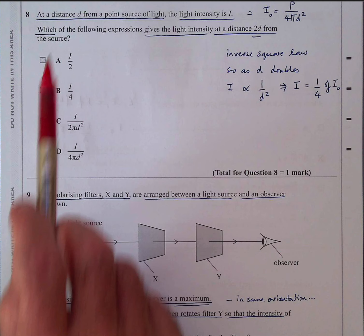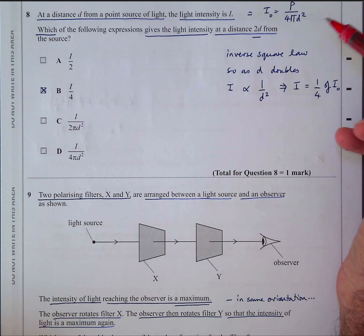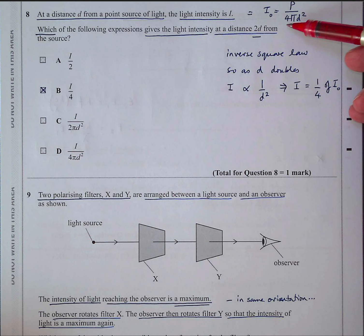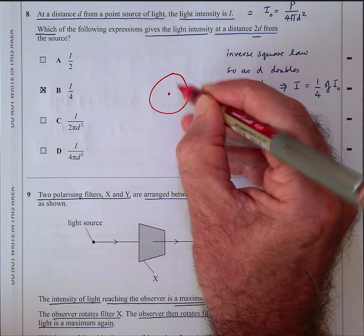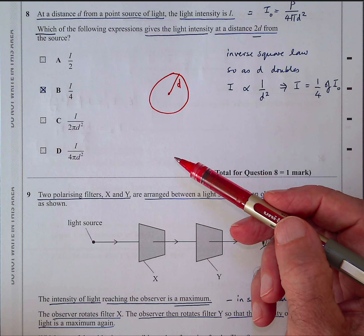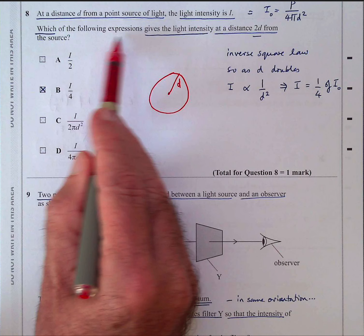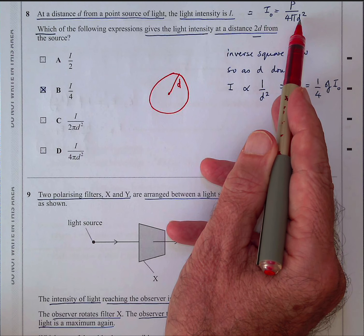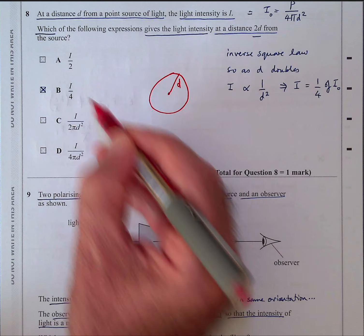Question eight: at a distance D from a light source the intensity is I. Intensity equals power divided by area, and this is the area of a sphere. If you double the distance, D squared becomes four times as much, so the intensity is quartered — this is the inverse square law. Which expression gives the light intensity at distance 2D? The distance is doubled, so intensity will be a quarter. The answer is B.